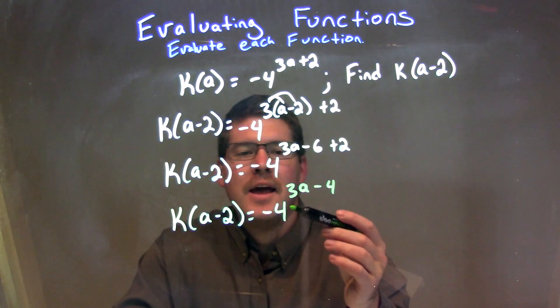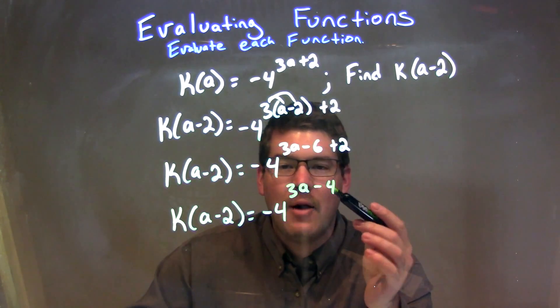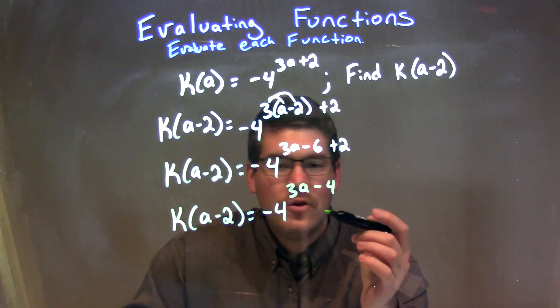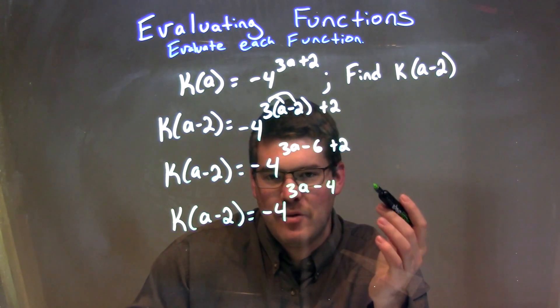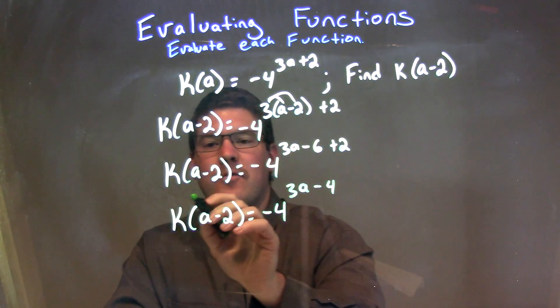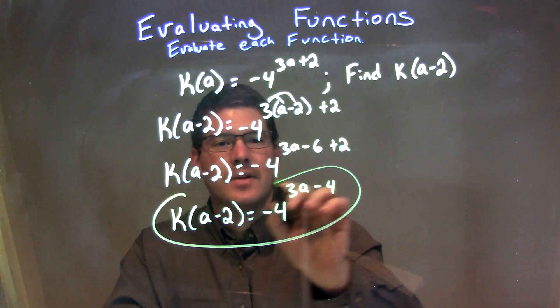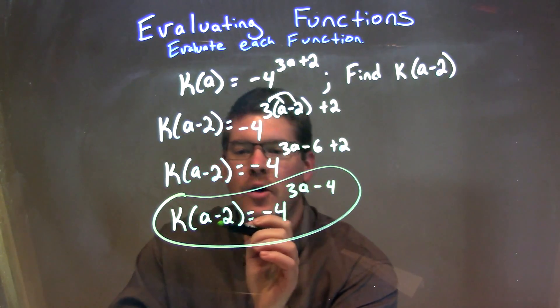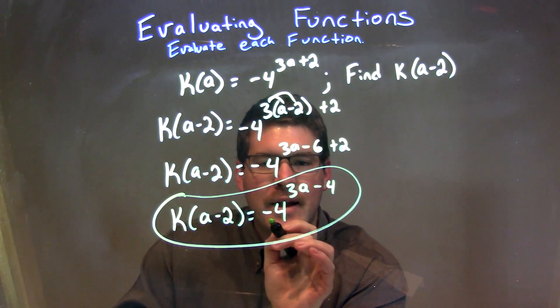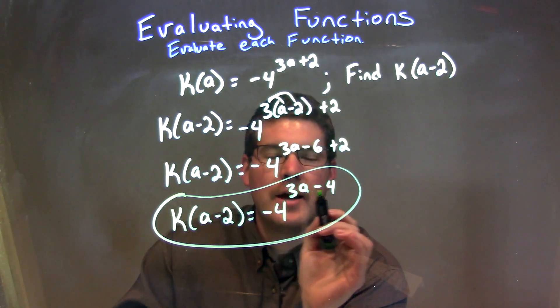At this point, we have a negative 4 to the 3a minus 4 power. There's really nothing we can do. We can't take 4 to that power, because we don't know what the variable a is. And so, our final answer here is written as this: k of a minus 2 is equal to negative 4 to the power of 3a minus 4.